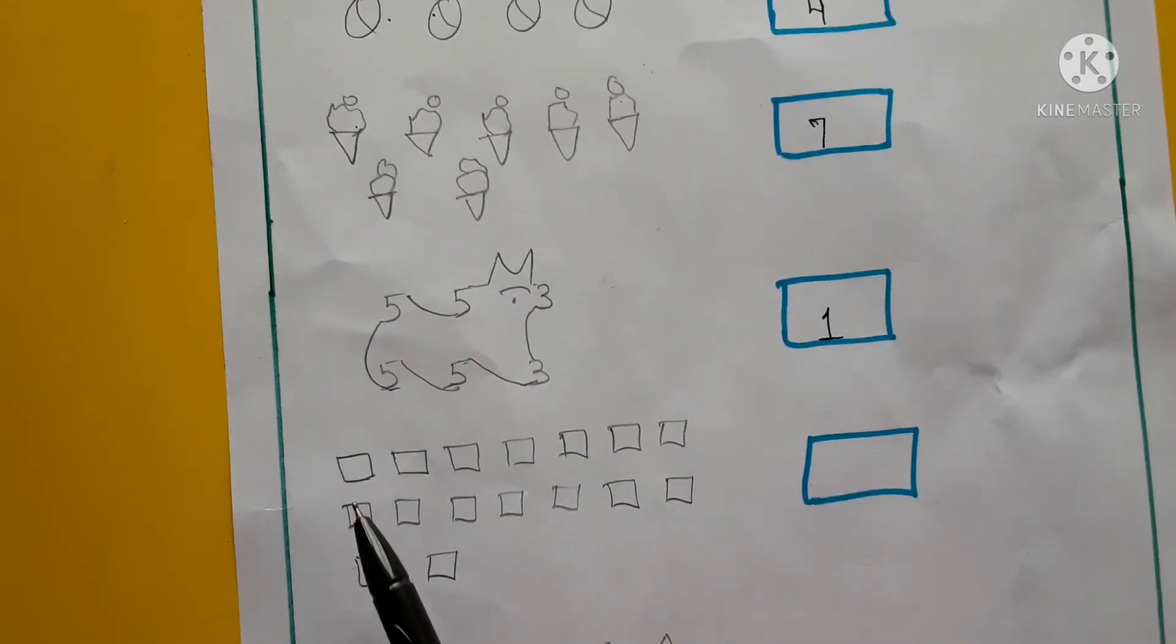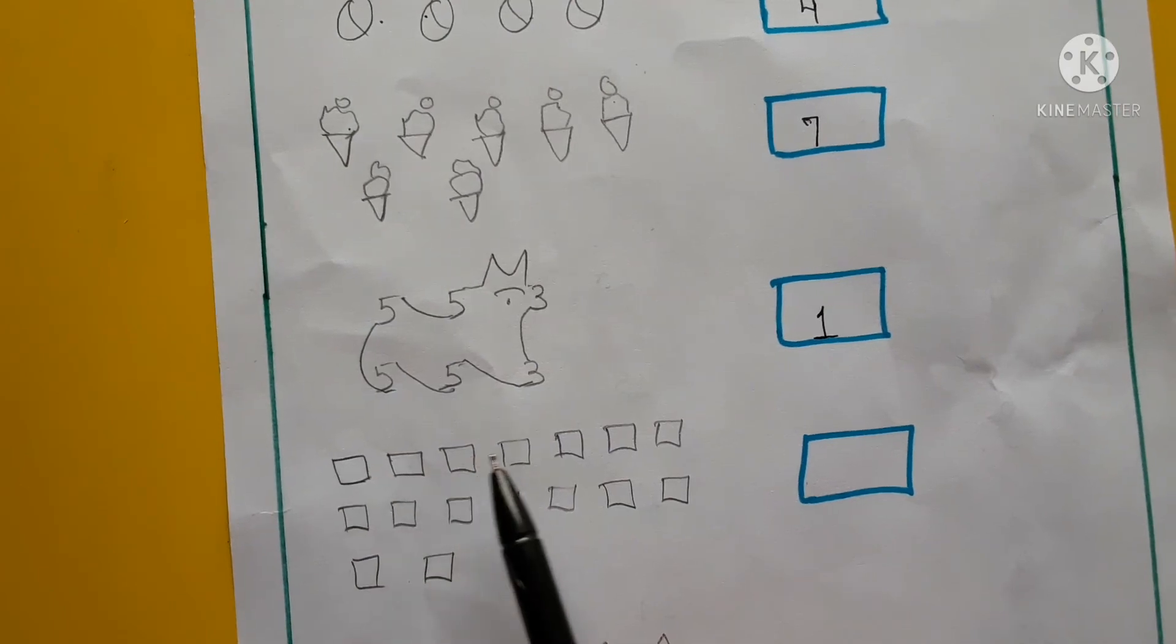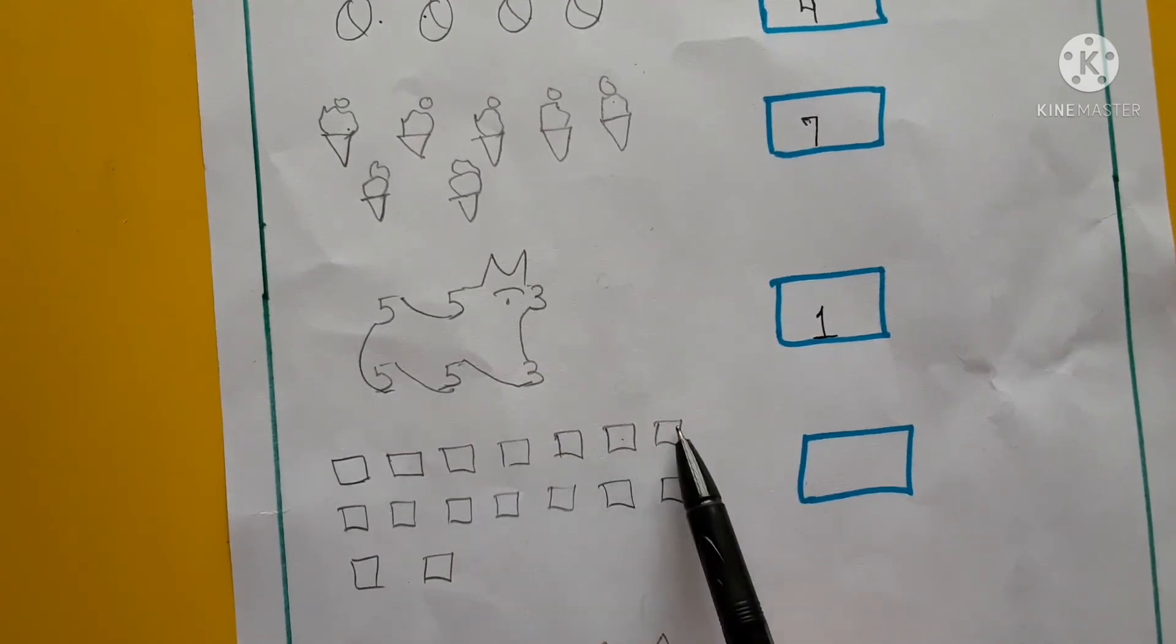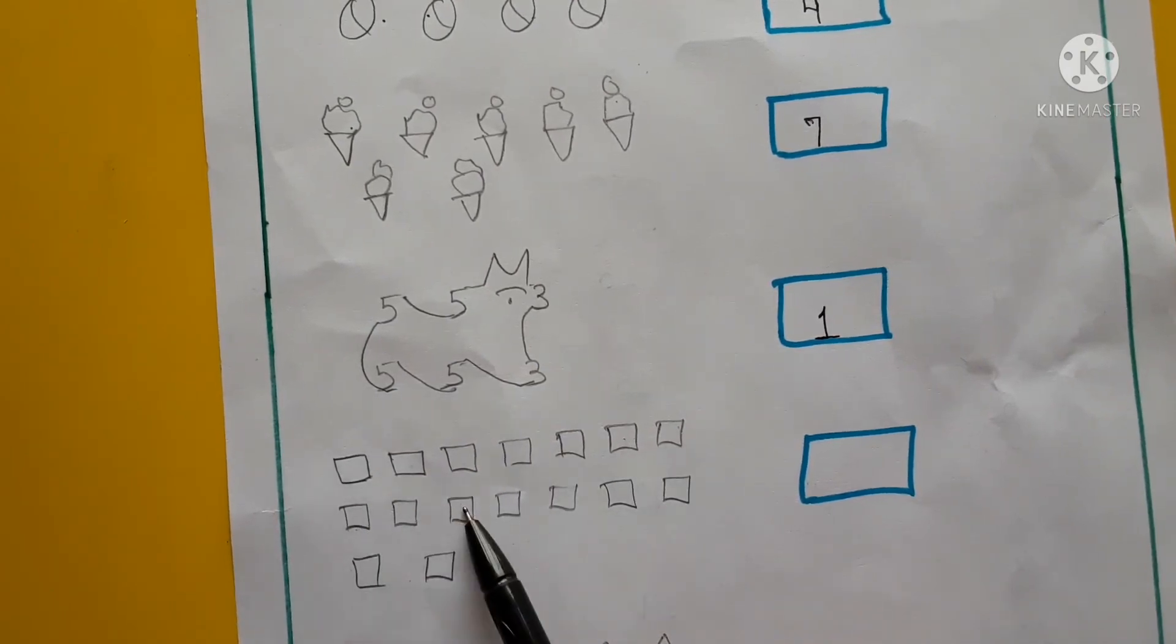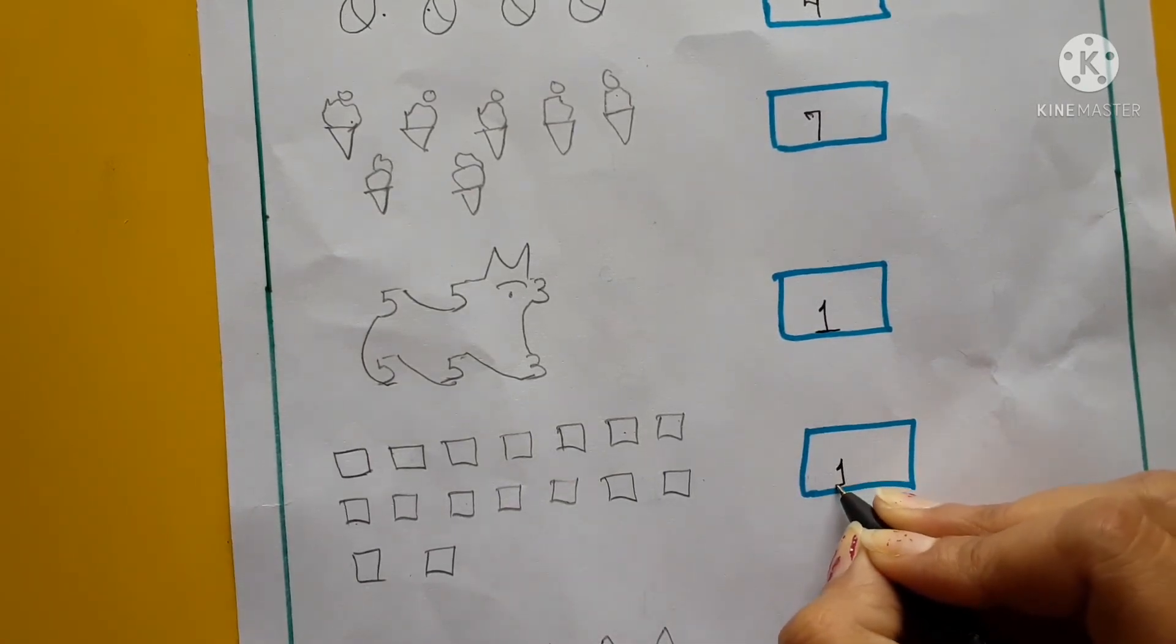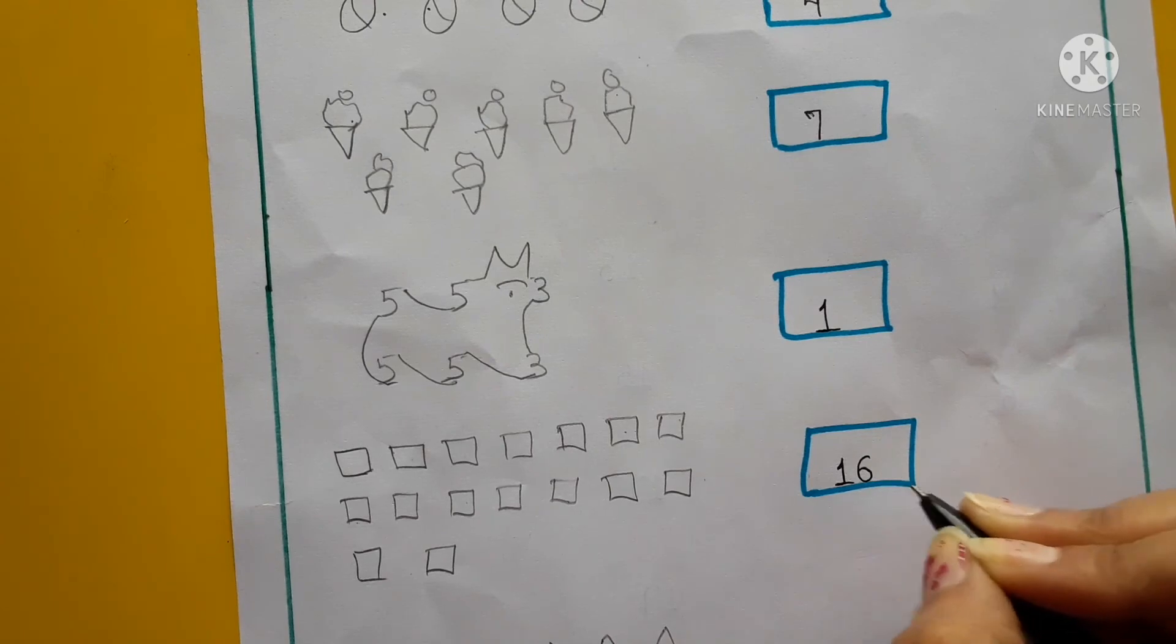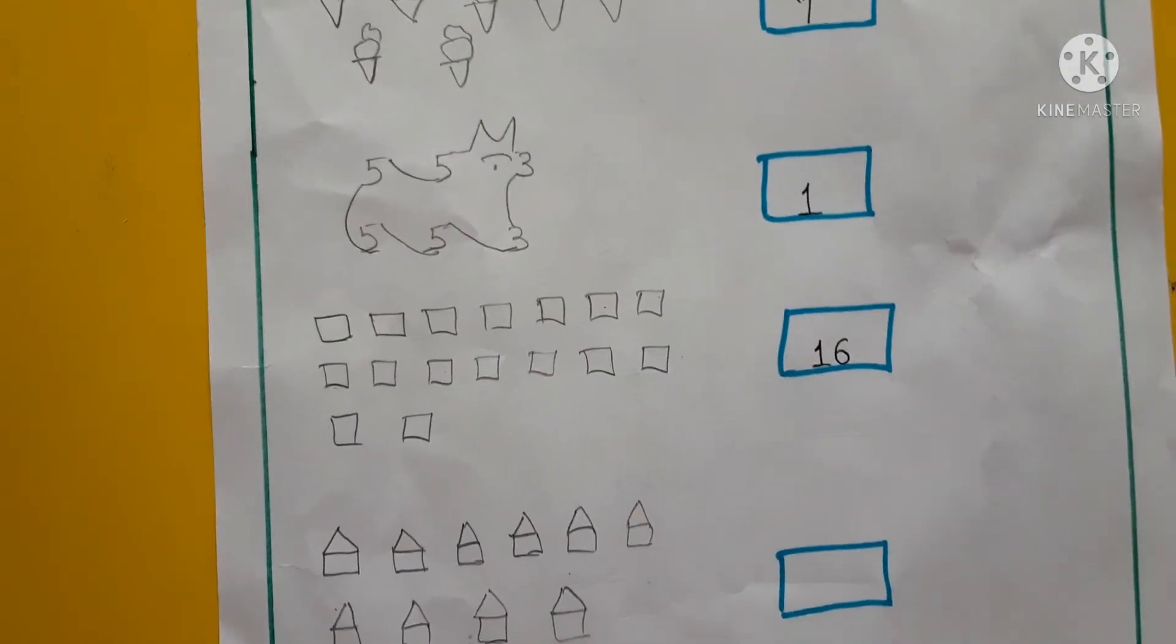Next, yeh count karna hai. 1, 2, 3, 4, 5, 6, 7, 8, 9, 10, 11, 12, 13, 14, 15, 16. Kitne boxes hai yeh? 16. Toh hum 16 kaise likhenge? 1, 6, 16. Yaha pe humne 16 mention karna hai.